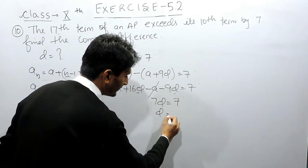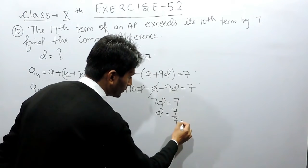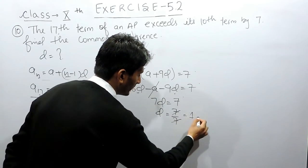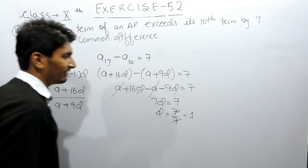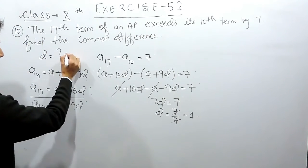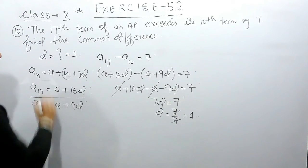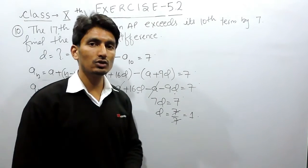So clearly the value of D will be 7 divided by 7, which equals 1. The value of common difference must be 1. This is how you can solve this question.